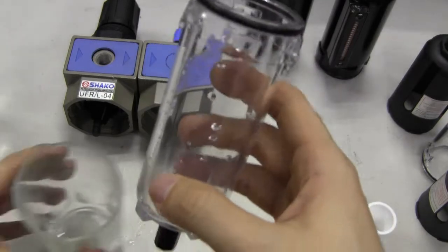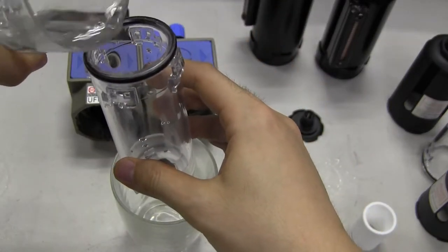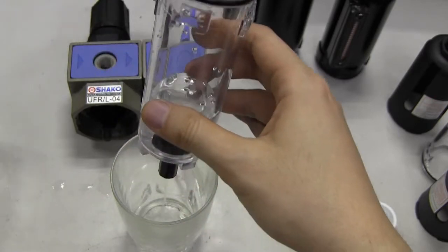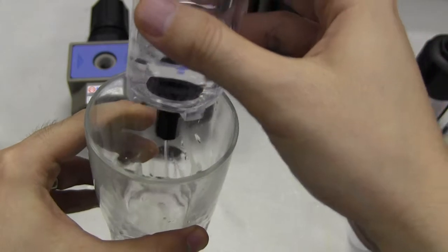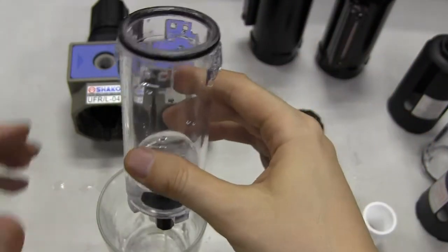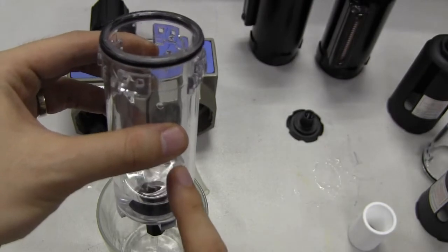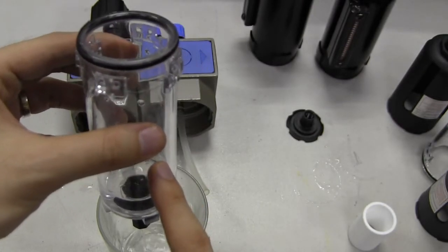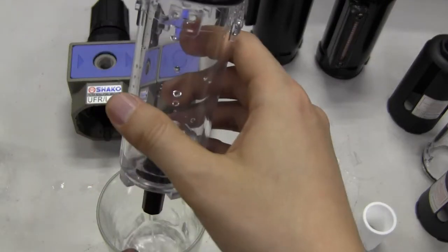For this one, the semi-auto drain, I'll show a quick demo. I'm just going to put some water inside. As you can see here, the water flows out. It will only flow out if there's no pressure inside, meaning if the machine is closed or there's no air in the air compressor - that's when the water will flow out.